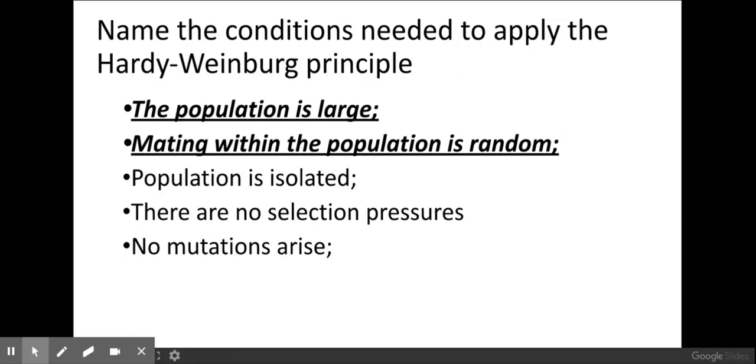For example, a small population of rabbits within a pet shop - we could not apply the Hardy-Weinberg principle to them because the population isn't large and the mating would not be random. The mating would only occur between those individuals that have been purposely put together.